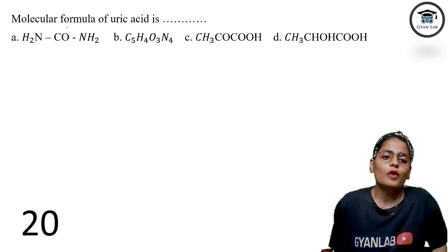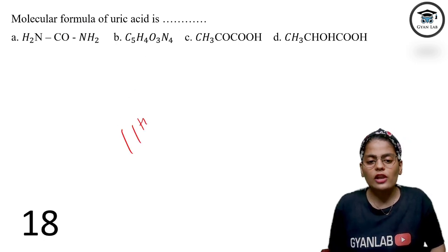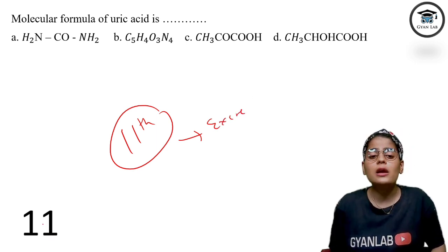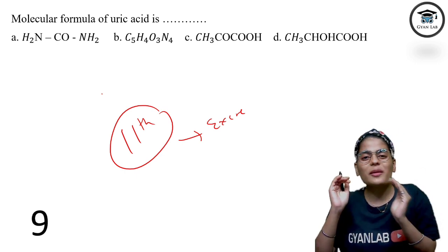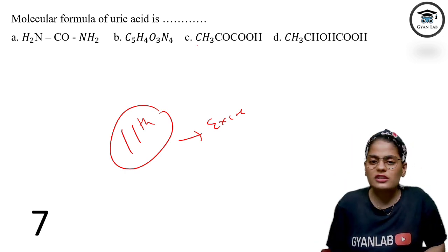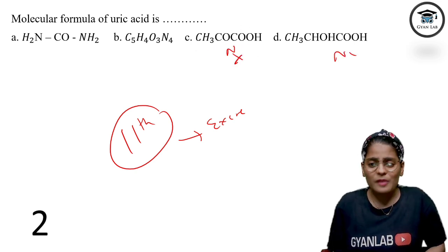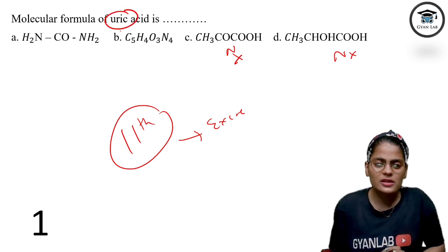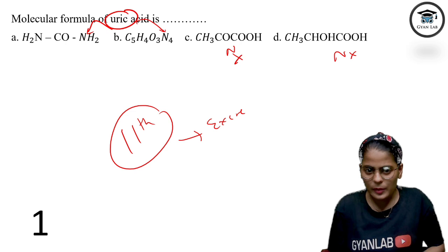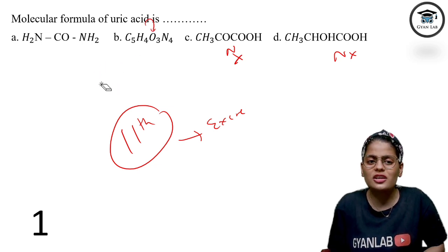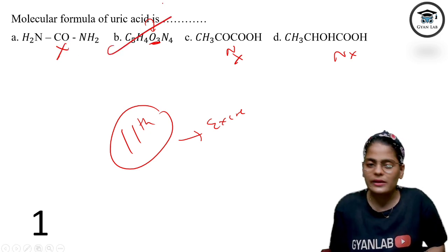The molecular formula of uric acid — this is from the excretion and osmoregulation chapter in class 11. In ammonotelism and uricotelism, the chemical formula is given in brackets. Since it's uric acid, it should contain nitrogen. Among the options, we need an acidic component — meaning COOH — so oxygen content should be higher. The option with fewer oxygen molecules cannot be an acid, so option number B is the right answer.